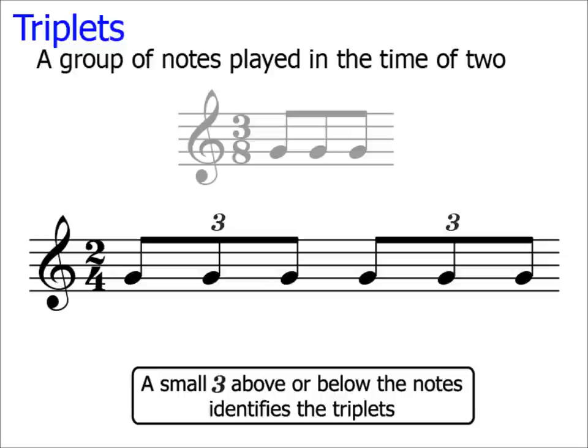If we take away the three, then this would be a very confusing bar. 2-4 means that there must be exactly two crotchet beats in the bar. But if we count the value of all the quavers, then there would appear to be three crotchet beats in the bar. So, a simple but important point is to make sure you know how to identify and draw triplets.